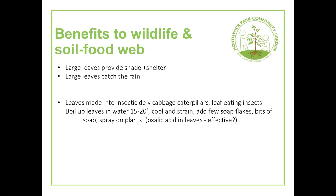Rhubarb crumble, rhubarb and custard, pies, cakes, jams — the stalks can also be frozen in chunks. If you eat too much it can have laxative effects, so watch out. The large leaves may provide shelter for small creatures and act as a rain-catching device. The leaves can be boiled, cooled and strained — with some soap flakes added — to make a spray that wards off caterpillars and leaf-eating insects from cabbages, possibly due to the oxalic acid.